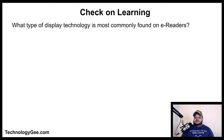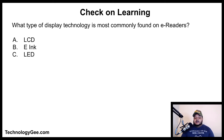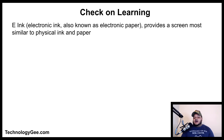Now let's do some check on learning. The first question: what type of display technology is most commonly found on e-readers? Is it LCD, e-ink, LED, or e-note? The correct answer is e-ink, which stands for electronic ink, also known as electronic paper, providing a screen most similar to physical ink and paper.